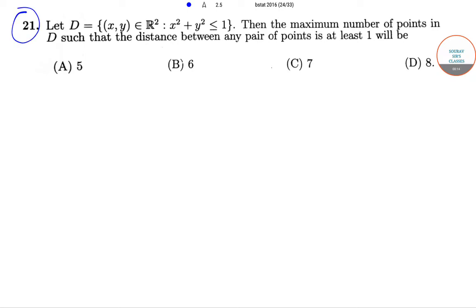In question number 21, let D be the point (x,y) which belongs to R² such that x² + y² is less than or equal to 1.